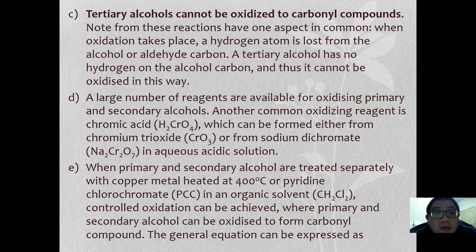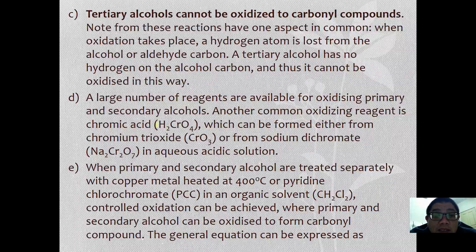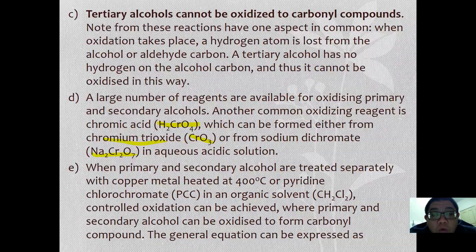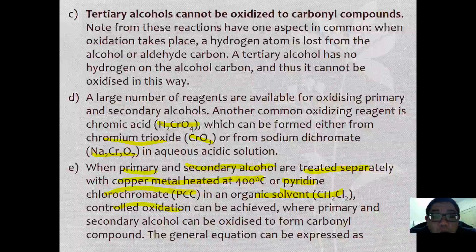Other than acidified potassium dichromate and manganate, there are also other common oxidizing agents such as chromic acid, which can be prepared from chromium trioxide in acidic solution. If you want controlled oxidation — stopping at the aldehyde or ketone stage — there is an alternative: treating primary and secondary alcohol with copper metal heated at 400°C, or pyridinium chlorochromate (PCC) in organic solvents. This achieves controlled oxidation where primary and secondary alcohols oxidize only to the carbonyl compound stage.